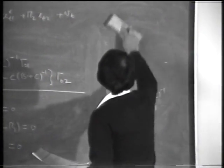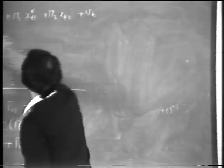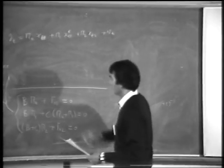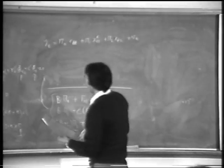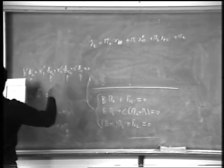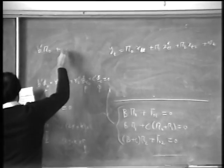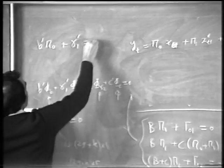I just write this part of the blackboard here. I can wipe this off now because these are exactly the same as they were before. So I'll have this first one becomes B prime gamma nought plus gamma prime 1 equal to 0.